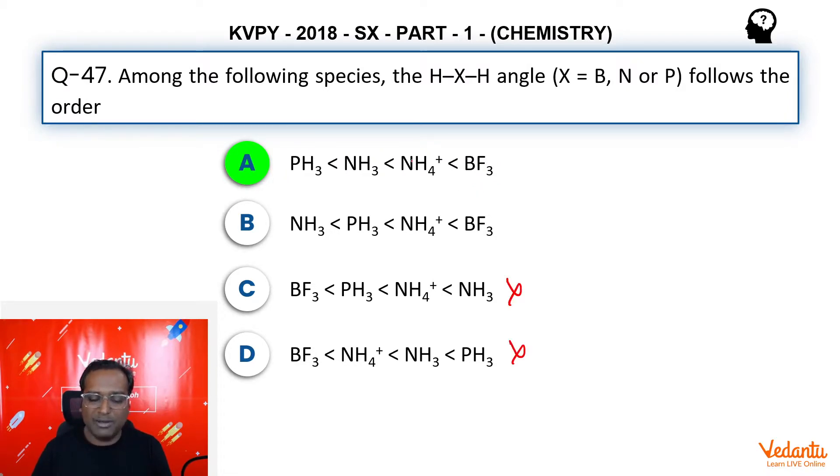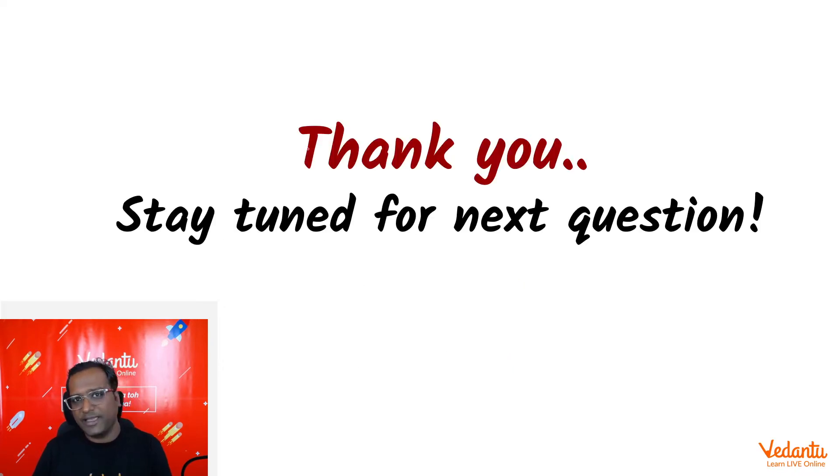BF3 was followed by ammonium. Ammonium was followed by ammonia. Phosphine was the lowest, close to 90. Therefore, A. Simple question. All you had to do was be careful about PH3 that it has 90 degrees, close to 90. Okay. Thank you so much for joining us, guys. And stay tuned for our next question.